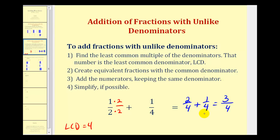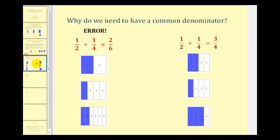It's important that we understand what's happening here, so let's take a look at a common error when adding fractions, and then we'll explain why we have to have a common denominator. A common mistake is to add the numerators and add the denominators, and this is incorrect. Here's a model for one-half, and here's a model for one-fourth. Using this idea, we're saying if we add these two pieces together, we'll get two pieces which represents two-sixths. But notice that two-sixths is actually less than one-half, so there's no way we could add these two pieces and get a smaller amount, and that's why this is incorrect.